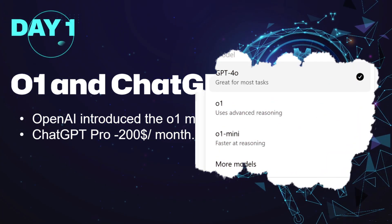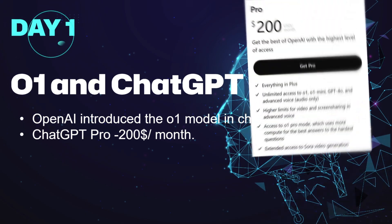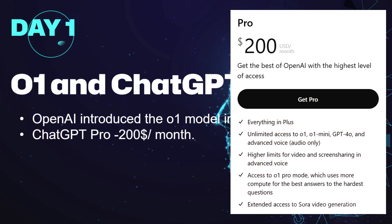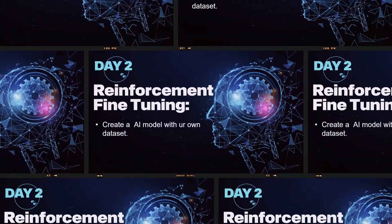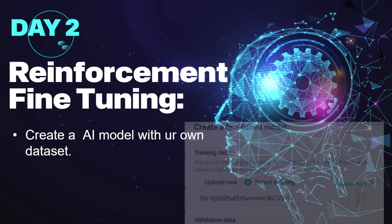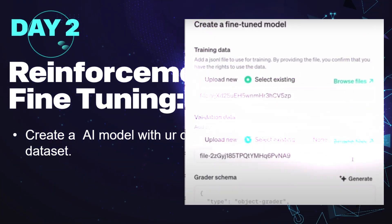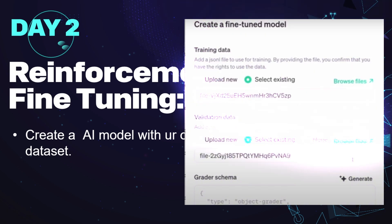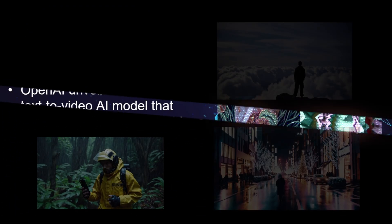On Day 1, the O1 model was integrated with ChatGPT, and a new ChatGPT plan was introduced — ChatGPT Pro — which costs $200 per month. Day 2 was related to reinforcement fine-tuning, where you will be able to create your own customizable model using your own training as well as testing dataset.